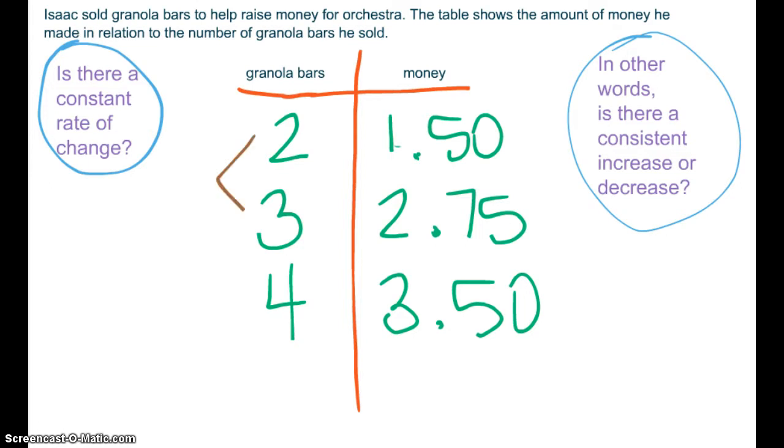Let's actually take a look at this. What is the difference, or the change between $2 and $3? That's a change of $1. What is the change between $1.50 and $2.75? That's a change of $0.75. What is the change here? $1. And what is the change here? $0.75.